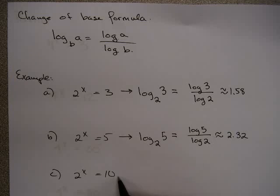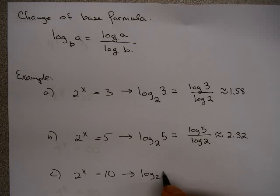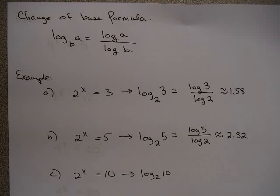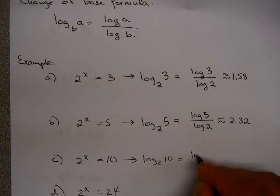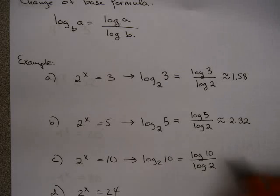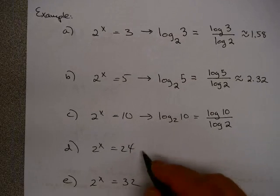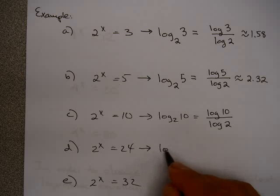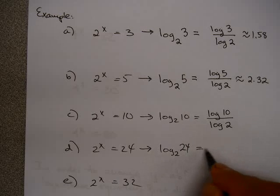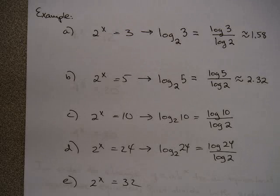Try this one on your own: 2^x = 10. That's log base 2 of 10, and you can use your calculator to find the approximation. This could be written as log(10) / log(2), and notice log base 10 of 10 is just 1, so you could leave it as 1/log(2) or use your calculator. For 2^x = 24, rewritten as a logarithm this is log base 2 of 24, which is log(24) / log(2) — again, use your calculator for an approximation.